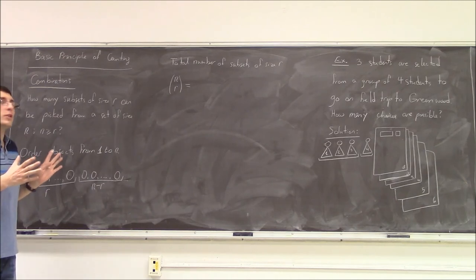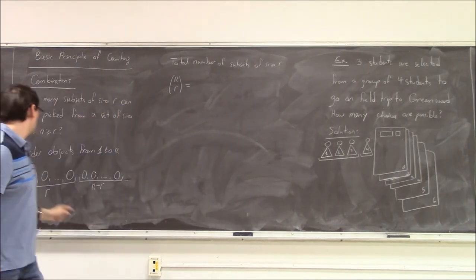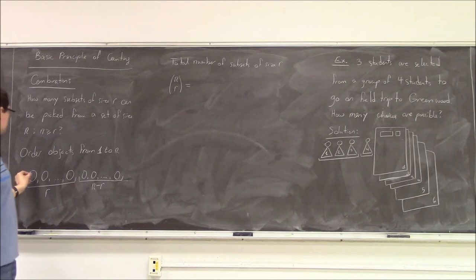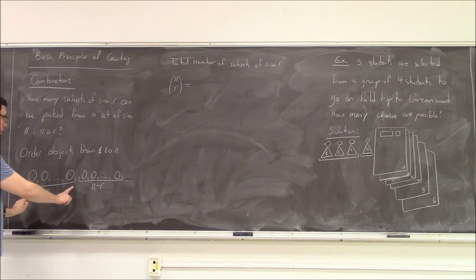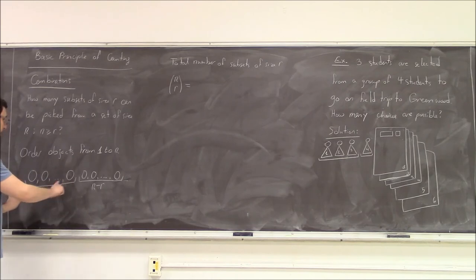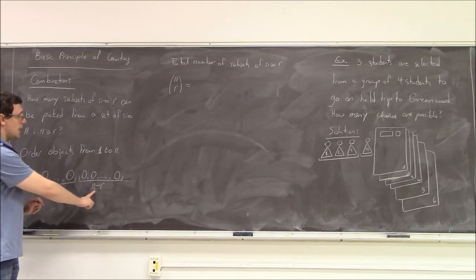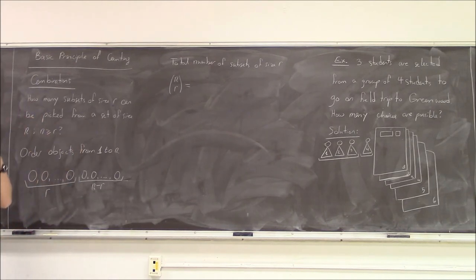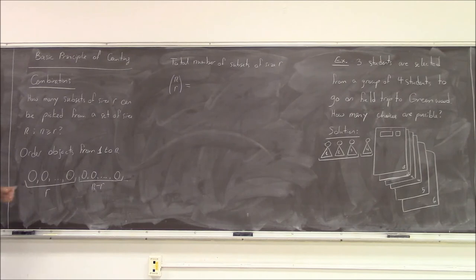One way to think of it is to have all the students, one through n, stand in a row. The students are standing in this row: one, two, three, four, all the way to n. On the floor there is a cart of size r, so there are basically r places marked. The first r places indicate the individuals who were selected, and the other cart contains n minus r places for the people that are not selected. We have listed all of them and simultaneously indicated which were selected and which were not.